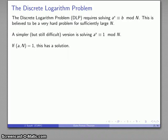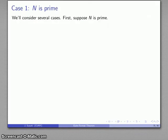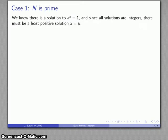We've already seen that if gcd(a, n) = 1, then we know this equation has a solution. But how do we find this solution? Let's split the problem into cases. In number theory we like working with prime numbers, so let's assume n is prime. For any value less than n, gcd(a, n) is guaranteed to be 1, so a solution exists.